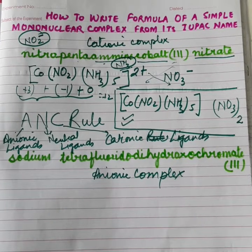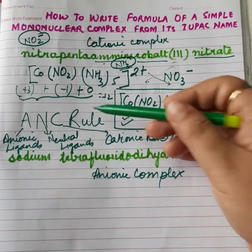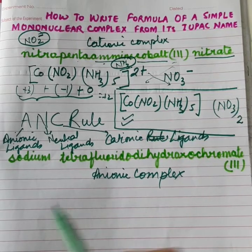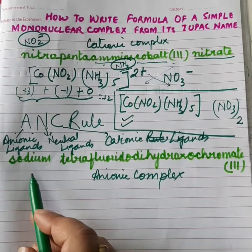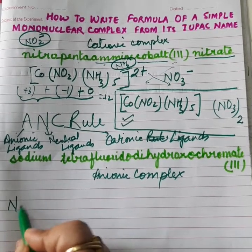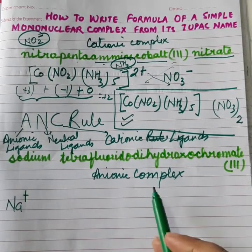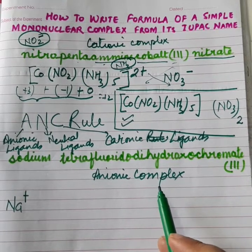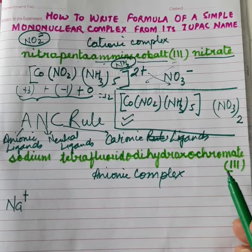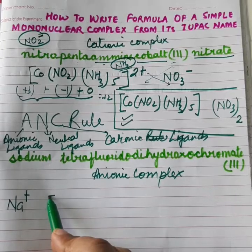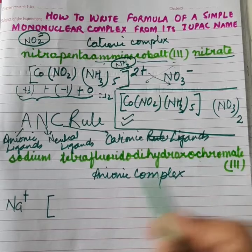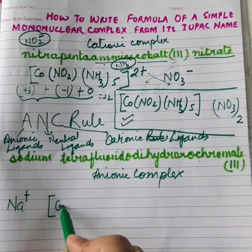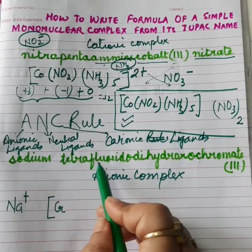As I told, there is no difference in the rule. Same ANC rule will be following here. But, as per the general rules, we will report the positive ion first. So, positive ion here is Na+. Followed by, we will write the negative ion now. Since negative ion is the complex ion, we enclose in the bracket. We report the central metal atom or ion first. So, here we have chromate means chromium is present.